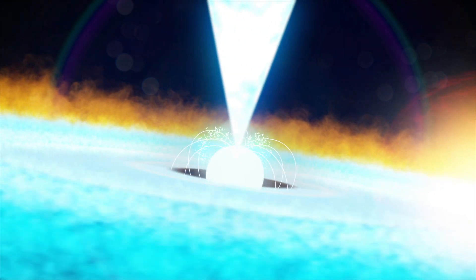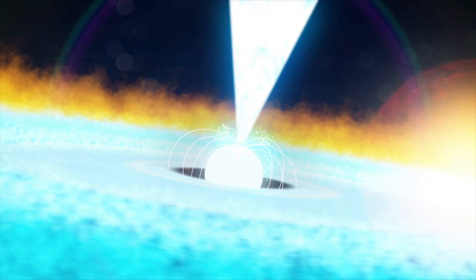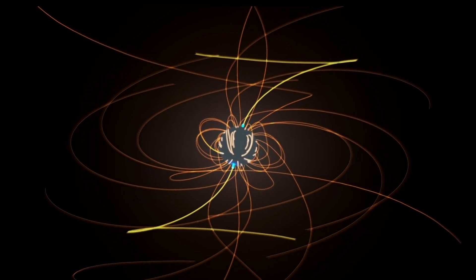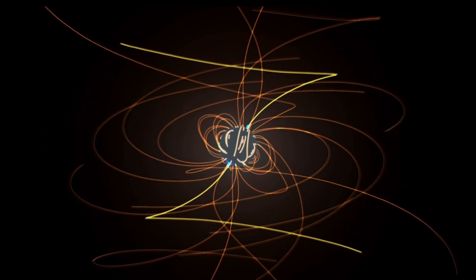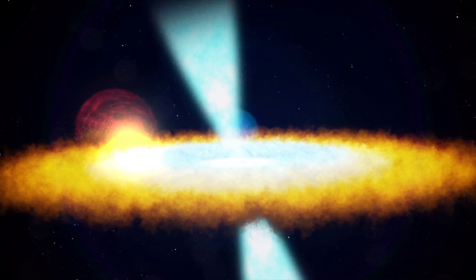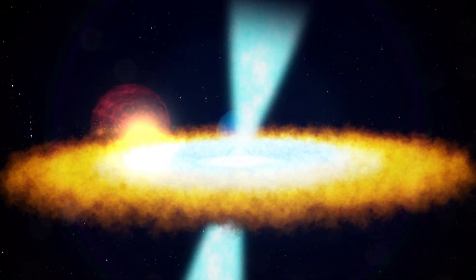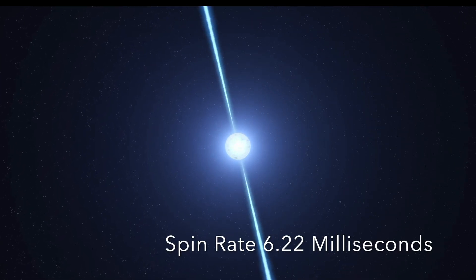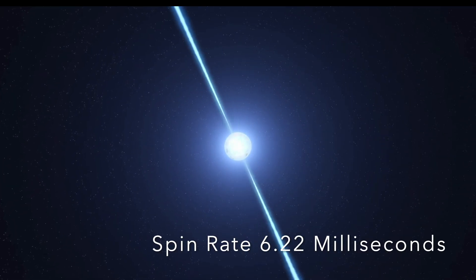Pulsars are pulsating stars that emit with remarkable regularity pulses of electromagnetic radiation from their magnetic poles. In the case of B1257 plus 12, this pulse, which is measured as the spin rate of the dead star, is an astonishingly fast 6.22 milliseconds.